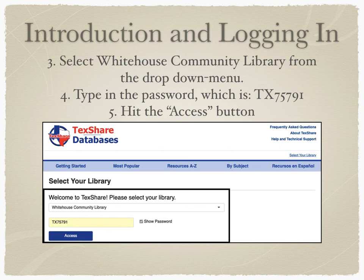Then you'll select your local library, which in this case is the White House Community Library. The password is capital T, capital X, seven five seven nine one. You can log in anywhere as long as you have an internet connection or are connected to a data plan if you're using your phone. Feel free to save this password to your computer so that your login process is even faster in the future. Then hit the access button.